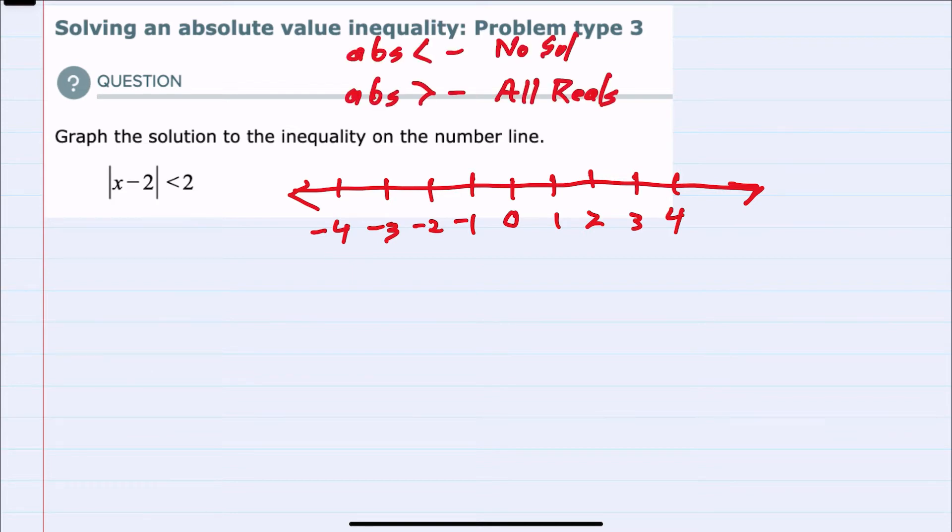No solution happens when we have an absolute value less than a negative, since absolute values are positive. The other possibility, an absolute value being greater than a negative, would be all reals because absolute values are always positive, therefore greater than a negative number.